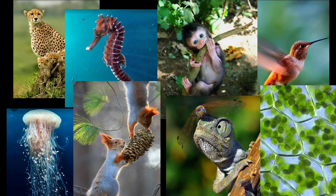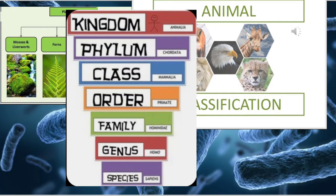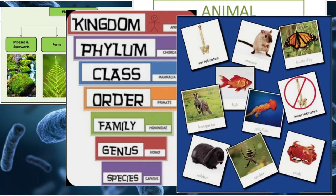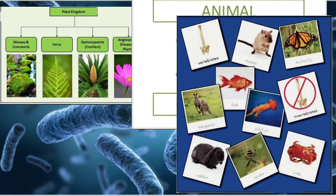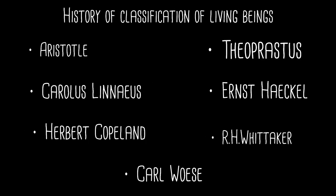Millions of living things inhabit the planet, but how were living things actually classified and on what basis? In order to study so many species, biologists have classified them based on the characteristics they share. There have been many classifications of living organisms throughout history, each with its own significance and understanding about living organisms at that particular era. Let's explore the history of classification of living organisms.